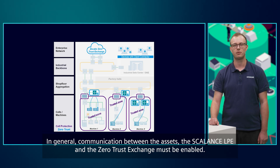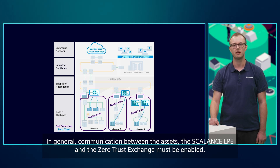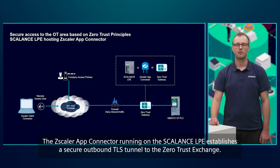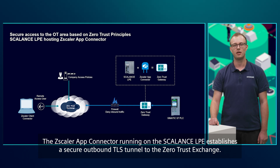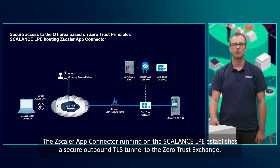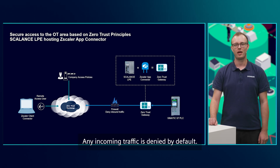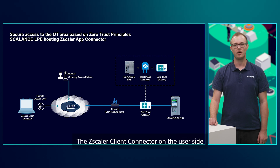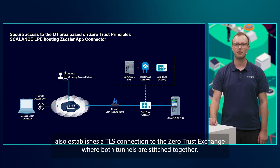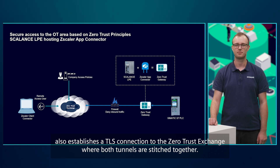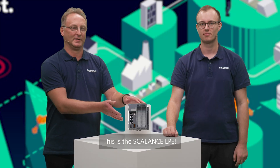In general, communication between the assets, the Scalens LPE and the Zero Trust Exchange must be enabled. The Zscaler app connector running on the Scalens LPE establishes a secure outbound TLS tunnel to the Zero Trust Exchange. Any incoming traffic is denied by default. The Zscaler client connector on the user side also establishes a TLS connection to the Zero Trust Exchange, where both tunnels are stitched together.